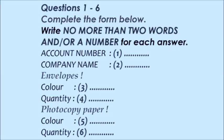Part one, part two, part three, and part four. Now look at part one. A man wants to place an order by telephone for some office stationery. Listen to the conversation between the woman and the man and answer the questions. First, you have some time to look at questions one to six. You should answer the questions as you listen because you will not hear the recording a second time. Listen carefully and answer questions one to six.